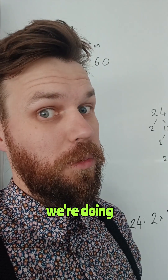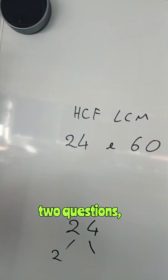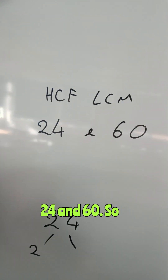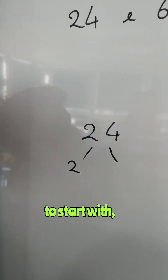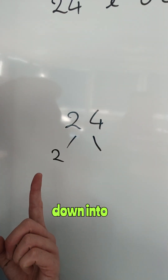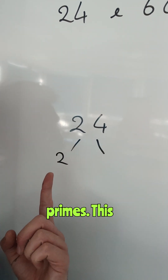Lowest common factor, highest common multiple. That's what we're doing today. These two questions: 24 and 60. To start with, we need to break them down into a product of primes.